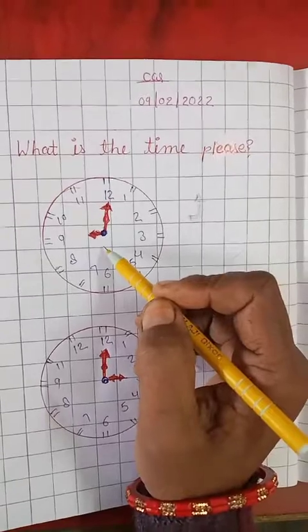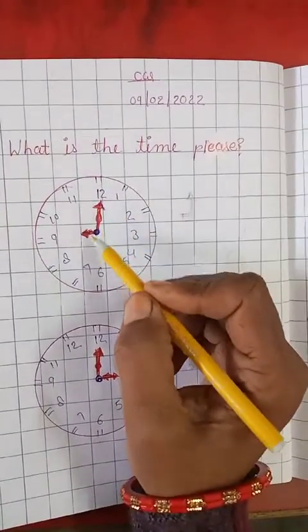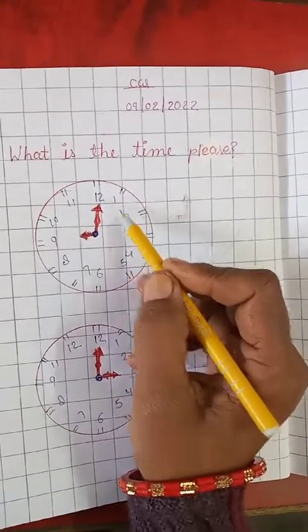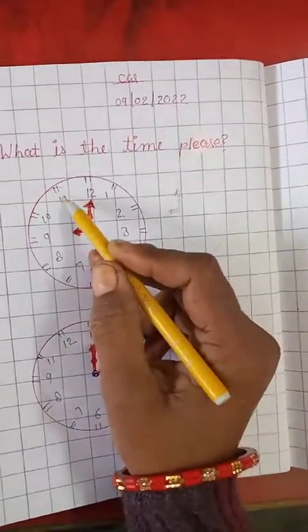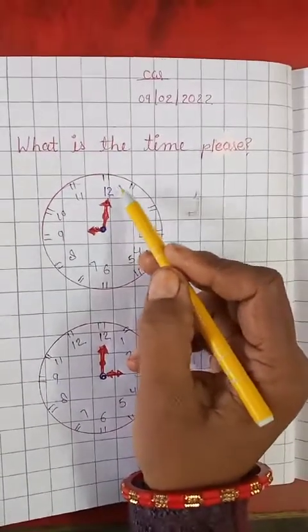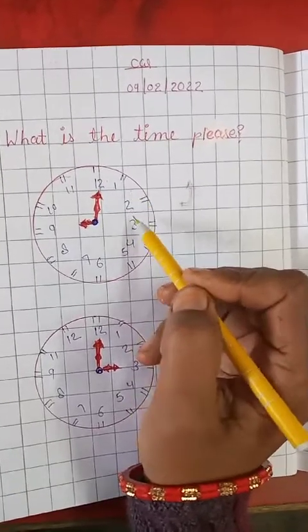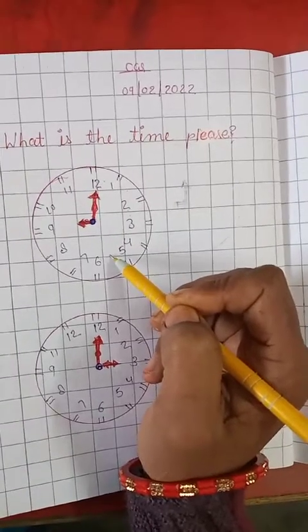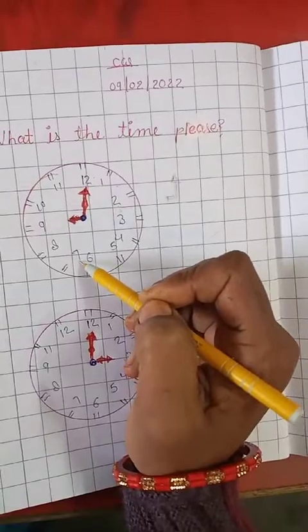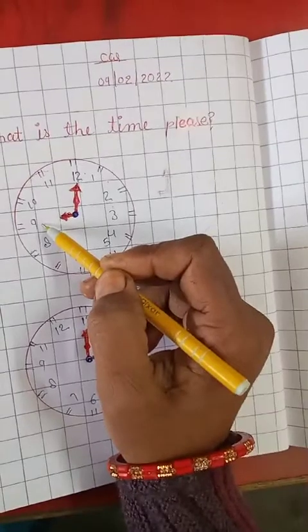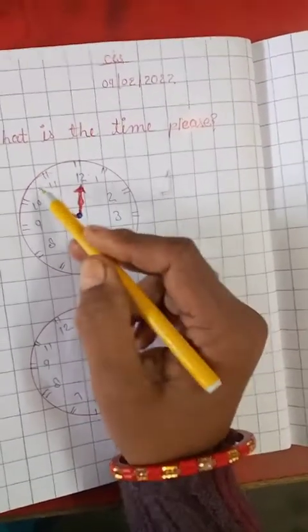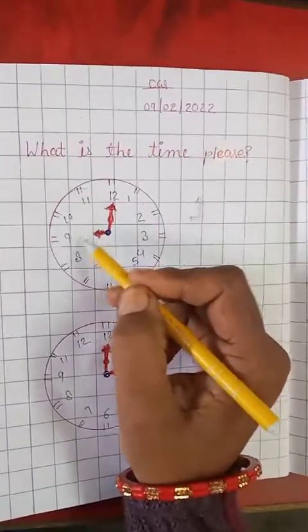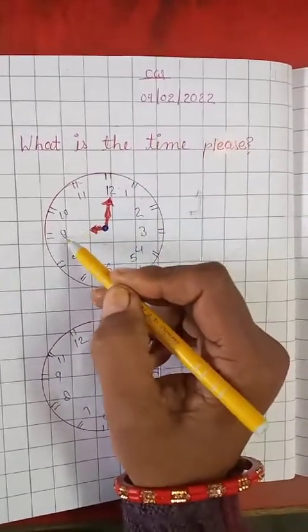You will see the time. We will learn which number is 12, 1, 2, 3, 4, 5, 6, 7, 8, 9, 10, 11. Count: 5 times 1 is 5, 5 times 2 is 10, 5 times 3 is 15, 5 times 4 is 20, 5 times 5 is 25, 5 times 6 is 30, 5 times 7 is 35, 5 times 8 is 40, 5 times 9 is 45, 5 times 10 is 50, 5 times 11 is 55, 5 times 12 is 60.